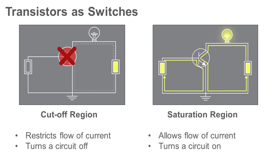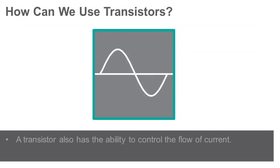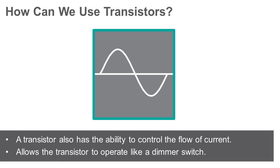Up until now, we've been describing the on-off behavior of a transistor used as a switch. A transistor also has the ability to control the flow of current. Controlling the flow of current allows the transistor to operate like a dimmer switch. This is an important ability because many circuits require more functionality than simply on or off.